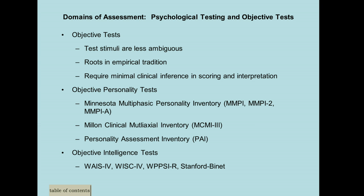The MMPI only covers Axis One disorders. The MCMI is much shorter, is correlated with the DSM, and gives you information on Axis One and Axis Two disorders. Similarly, the PAI is also shorter than the MMPI, gives you information on Axis One and Axis Two disorders, and is correlated with the DSM. In my opinion, the MCMI and the PAI give you a lot more information than the MMPI.